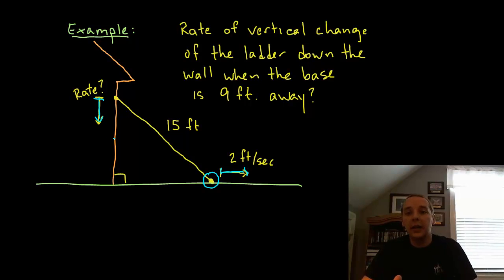They will give you information like the length of the ladder, and they'll give you information like how fast somebody is pulling the base of the ladder away from the wall. And then they'll ask you a question, something like this: what's the rate of vertical change of the ladder down the wall at a particular moment in time, such as when the base is specifically 9 feet away?